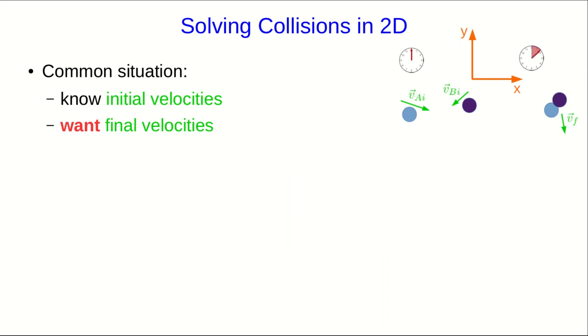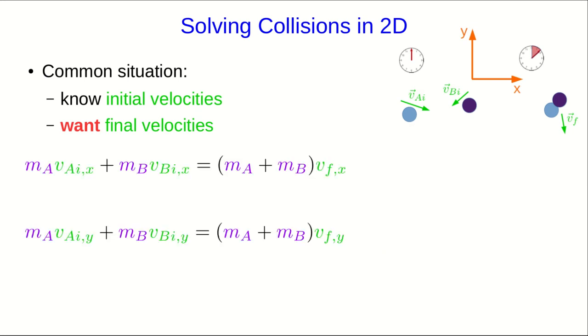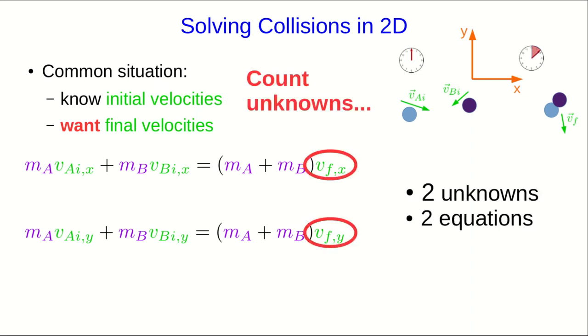Another common situation, though, would be a situation where the two objects stick together and move with a common final velocity. Now your conservation of momentum equations are going to look like this. You only have two unknowns and two equations, and so this would be perfectly solvable.